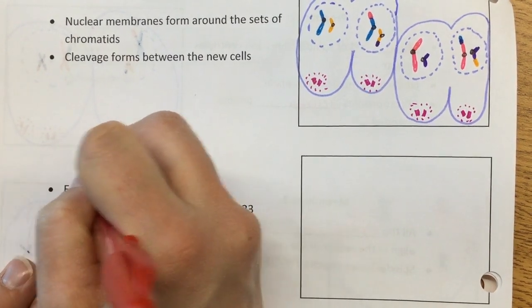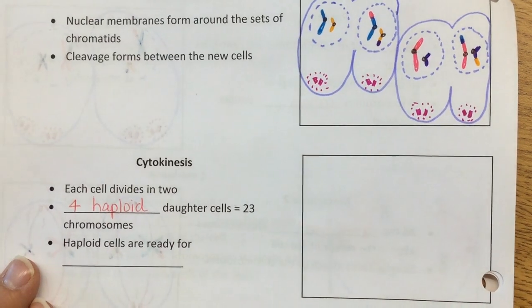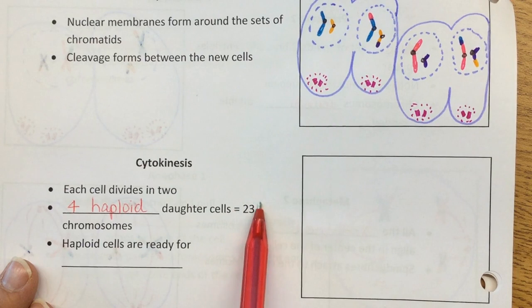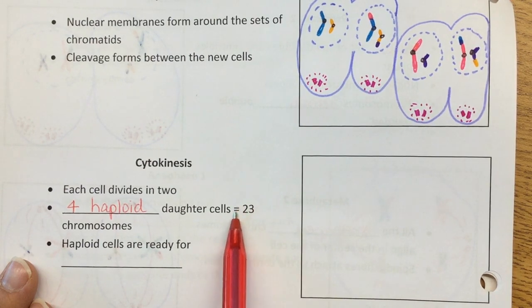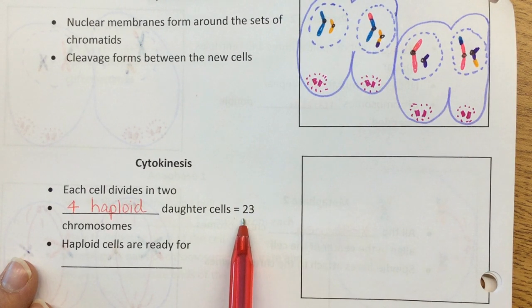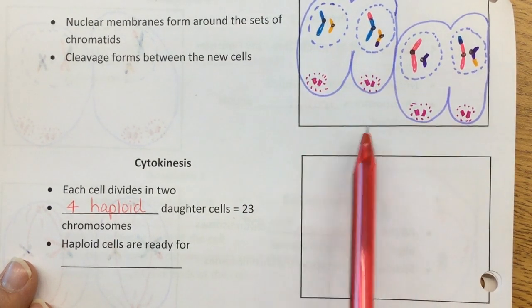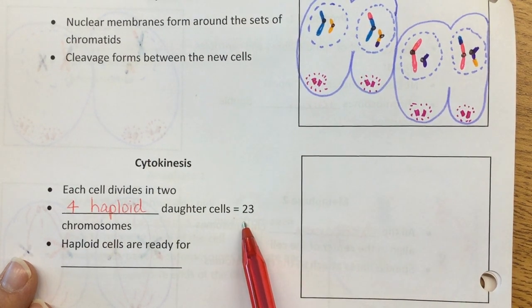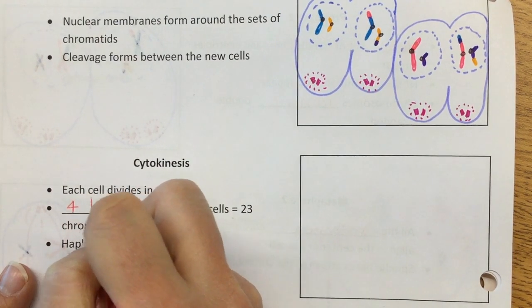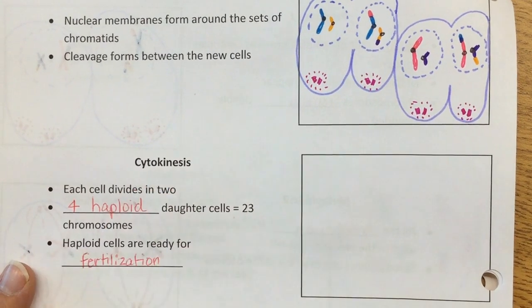So 23 chromosomes, right? All of our cells in meiosis, our sex cells, our egg and our sperm have to have 23 chromosomes. And this is how this works, see? They're all going to end up with just half as many as what we started with, okay? And the haploid cells now are ready for fertilization. Time to make a baby, okay?